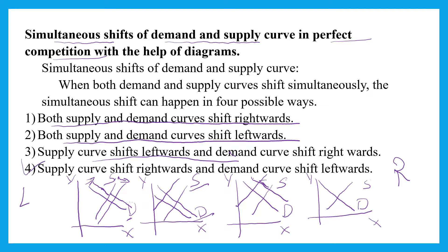And if you consider the fourth point, supply curve shifts rightward, and demand curve shifts towards the left side. This will be the position of both demand and supply. In the first diagram, both demand and supply shift towards the right side. In the second diagram, both demand and supply curve shift towards the left side. In the third diagram, supply shifts towards the left side and demand shifts towards the right side. In the fourth diagram, supply shifts towards the right side and demand shifts towards the left side. These are the four possibilities.